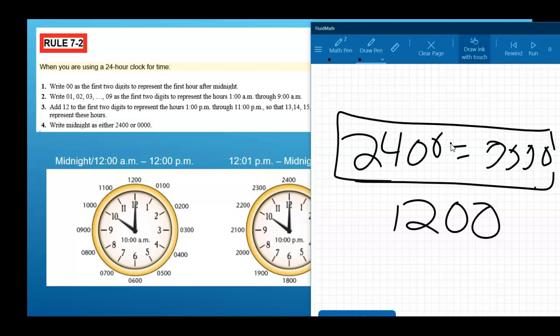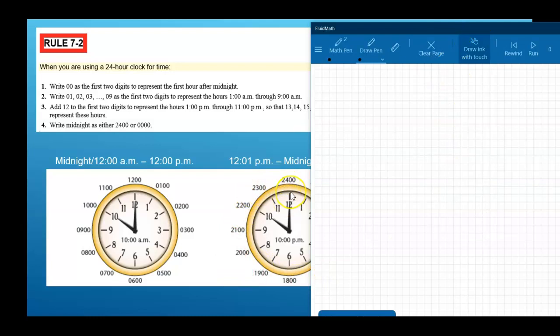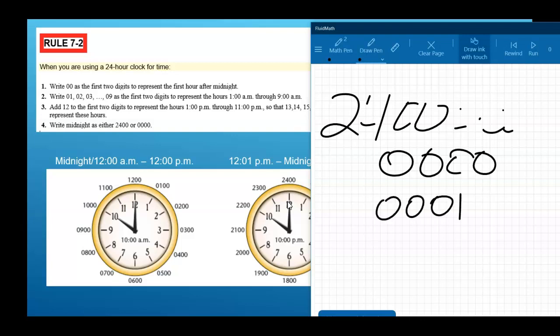So that time kind of starts a little bit of confusion with students. So if it is first thing in the morning, say you stayed up all night, you stayed up till midnight. So you stayed up to 2400 hours, which is actually 0100 hours. The next minute is 0001. There's no such thing as 2401. 2400 is the absolute last number you can get to. So one minute after midnight is 0001. This would go all the way up to 0059, 59 minutes after midnight. Then you'd go to 0100, which is one o'clock in the morning.